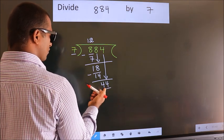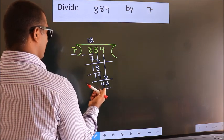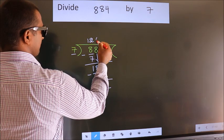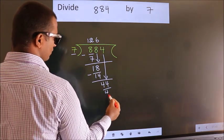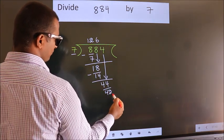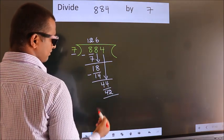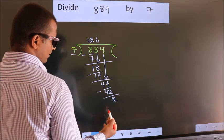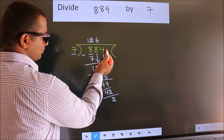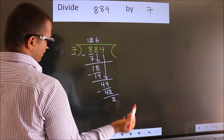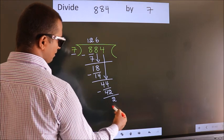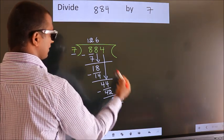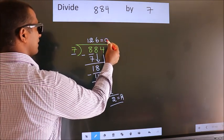A number close to 44 in the 7 times table is 7 sixes, which is 42. Now we subtract. We get 2. No more numbers to bring down, so we stop here. This is our remainder. This is our quotient.